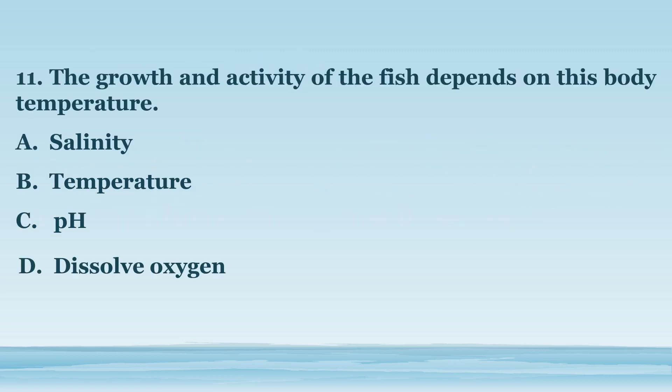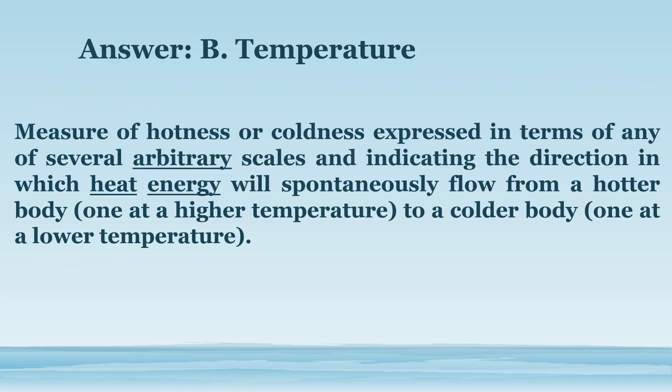Number 11. The growth and activity of the fish depends on this body temperature. A. Salinity. B. Temperature. C. pH. D. Dissolved oxygen. The answer is letter B. Temperature. Measure of hotness or coldness expressed in terms of any of several arbitrary scales and indicating the direction in which heat energy will spontaneously flow from a hotter body to a colder body.